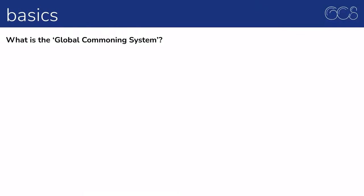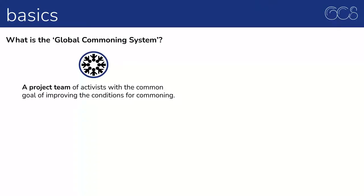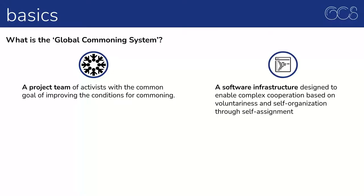What is the global commoning system? First, we are a project team of activists with the common goal of improving the conditions for commoning. The global commoning system is a software infrastructure designed to enable complex cooperation based on voluntariness and self-organization through self-assignment.